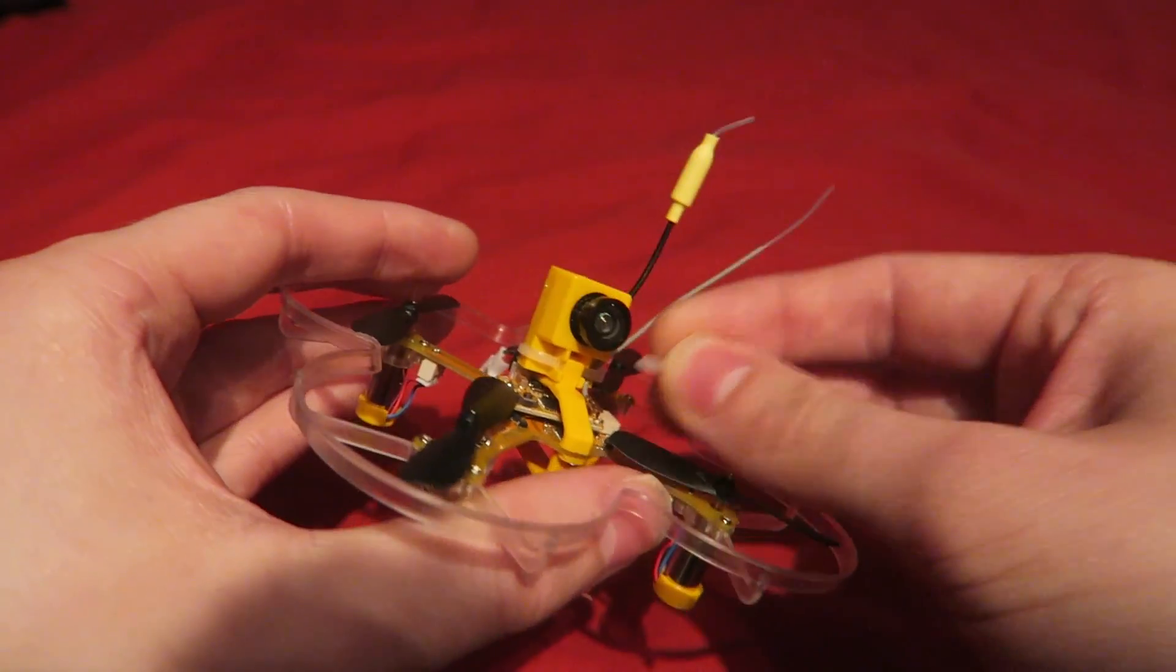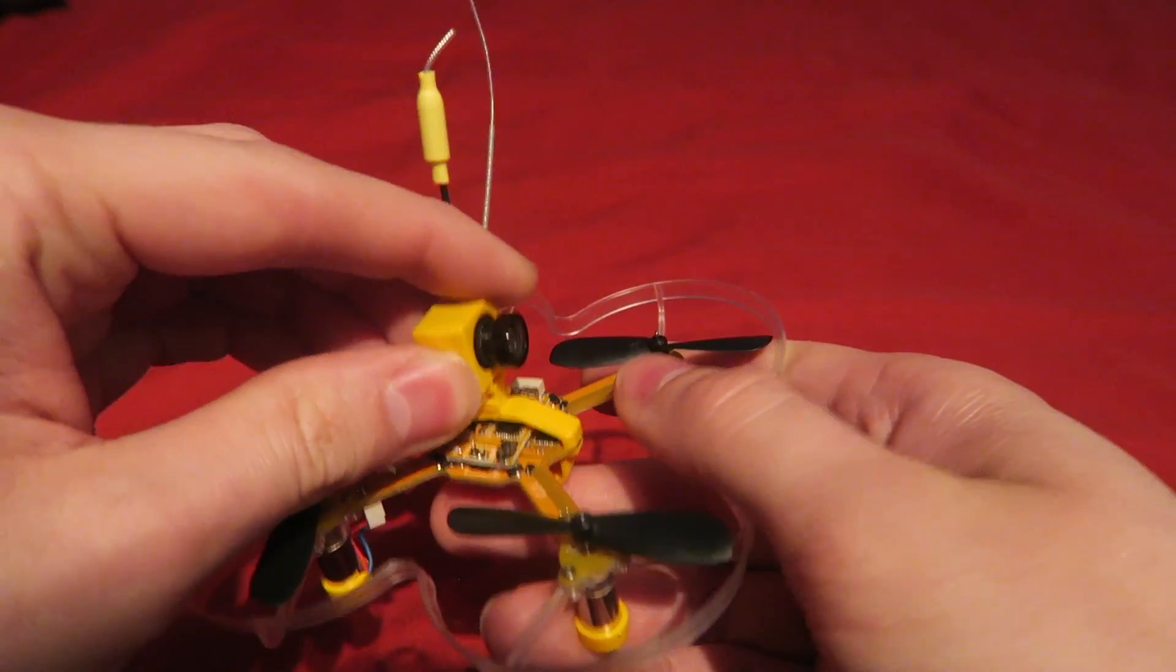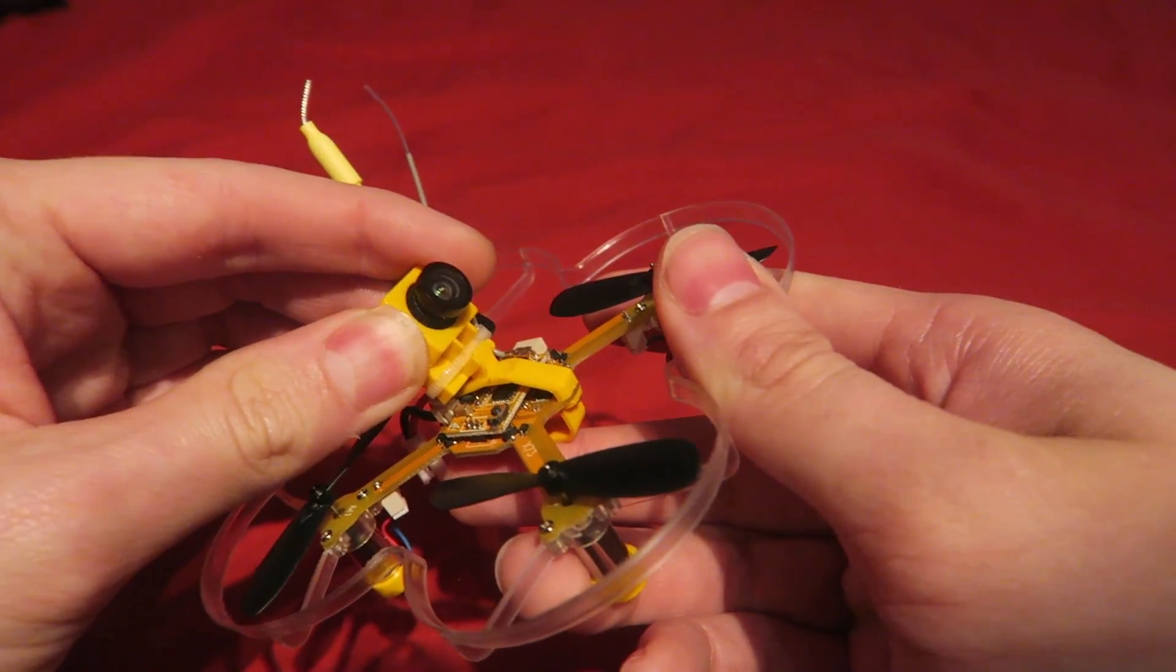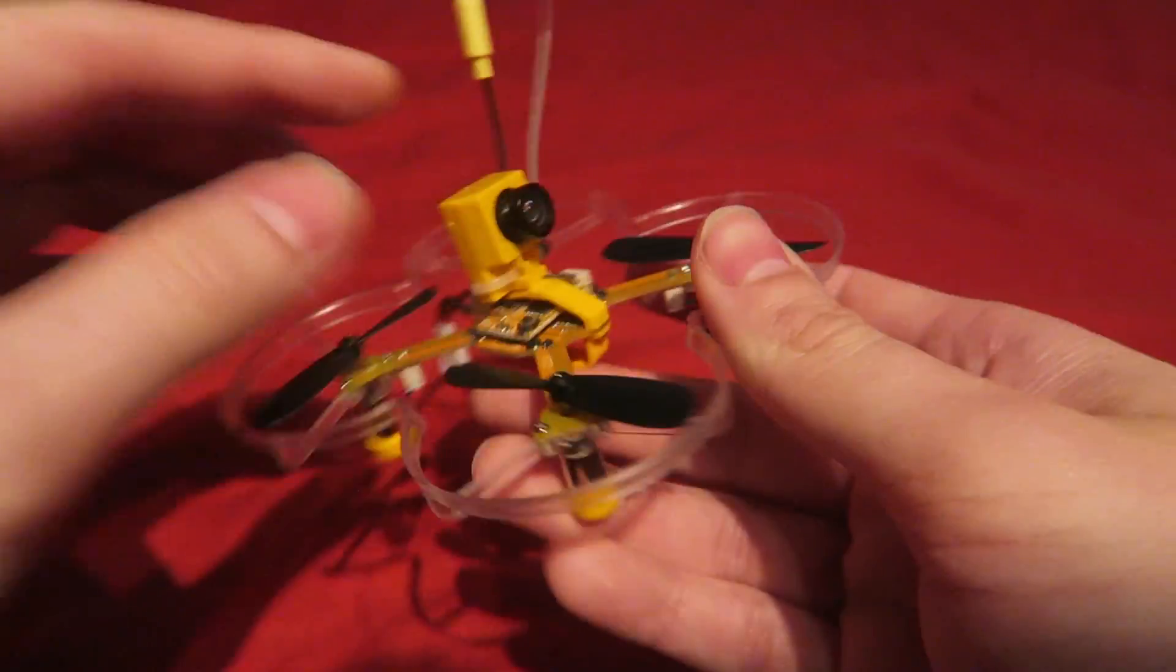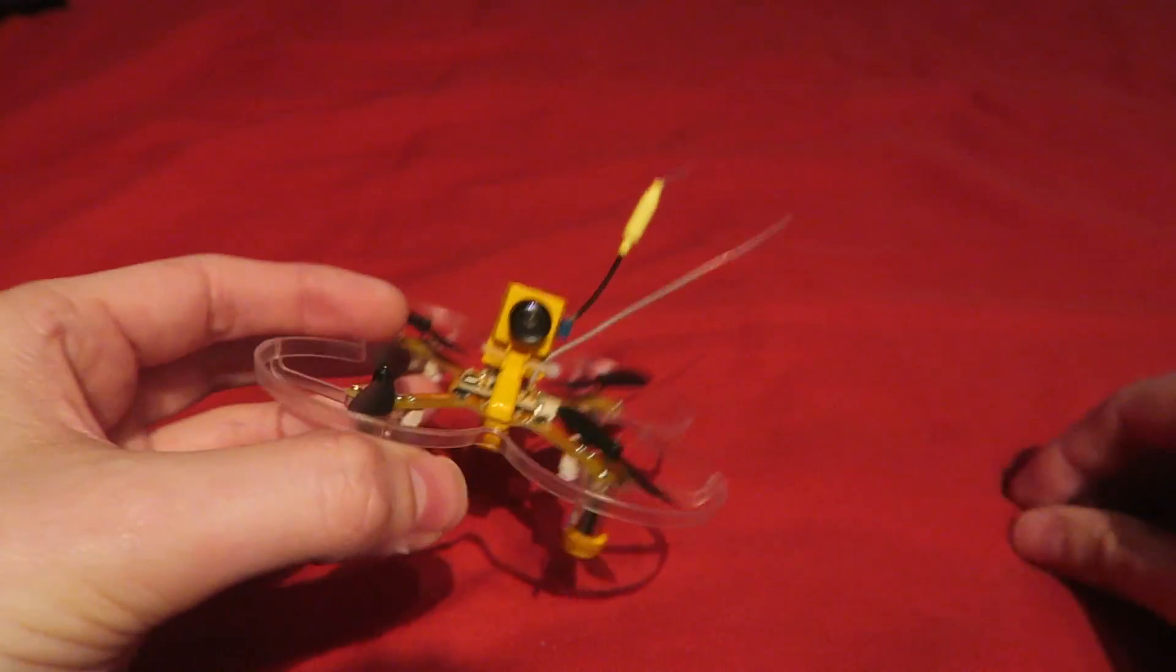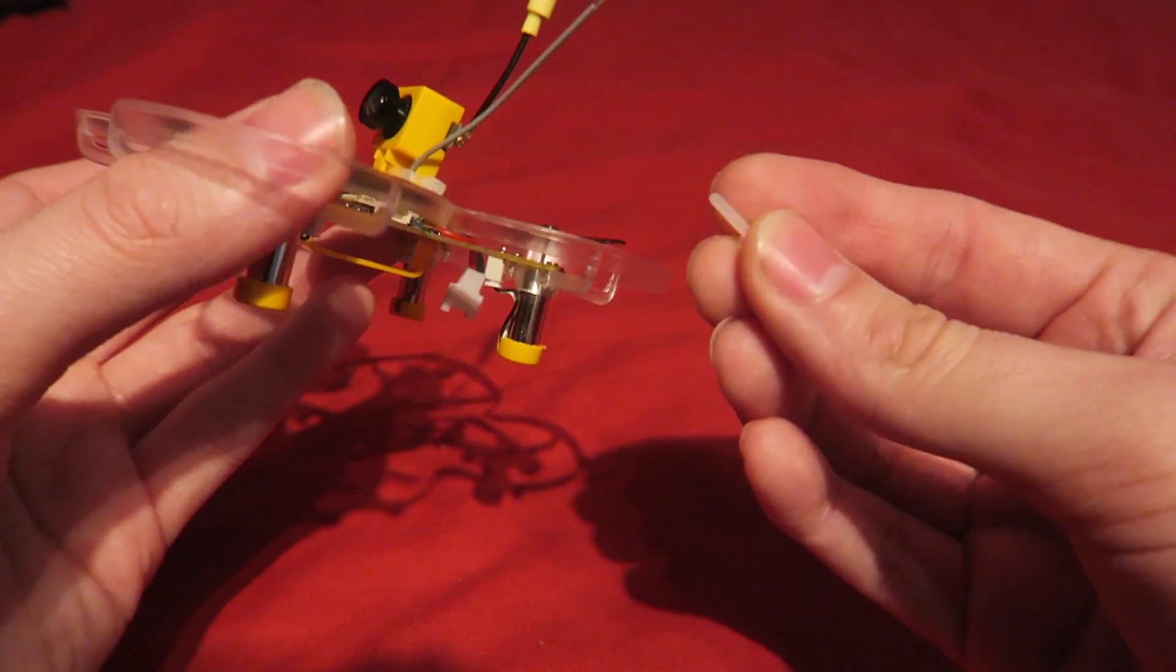You can see mine doesn't have a nut on the end anymore, that's because in a crash this just pinged off. So the idea is that that goes through there and you tighten up however the camera does change its angle to the point where it can come off completely. So I just stuck on a cable tie there and did away with this because this camera is going to fly off every time you have a crash.